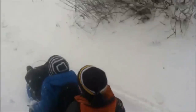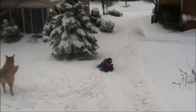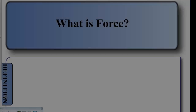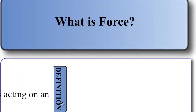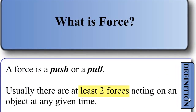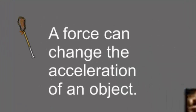Horses are a part of our everyday life. These sledders would not be able to accelerate down the hill if it were not for the force they encountered on top of the hill. A force is a push or a pull. Usually there are at least two forces acting on an object at any given time.